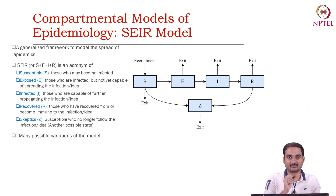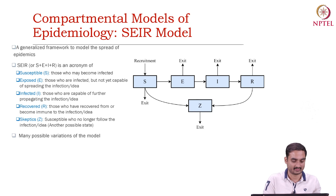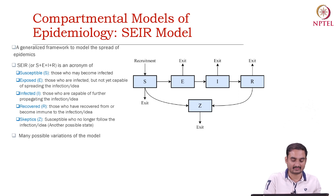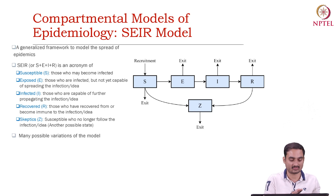I is the infected state, which indicates that the node has already got infected. R is the state which indicates recovery. Skeptics are basically those nodes which are susceptible but who are no longer following the infection — they are basically immune in some ways.